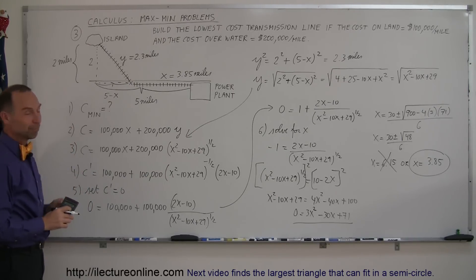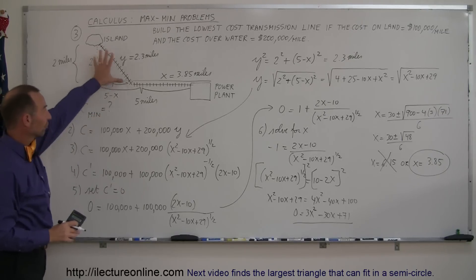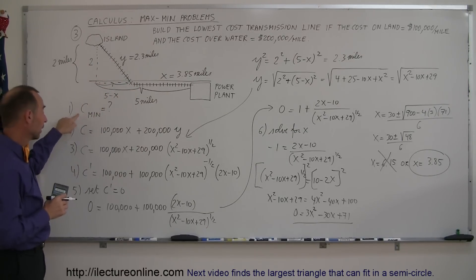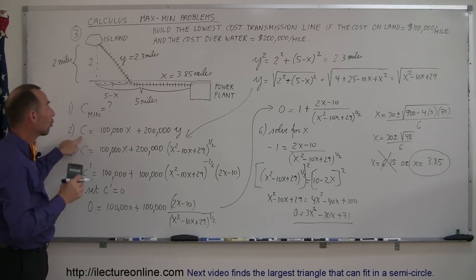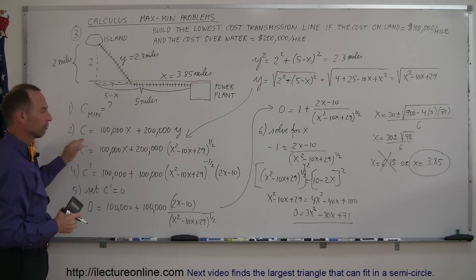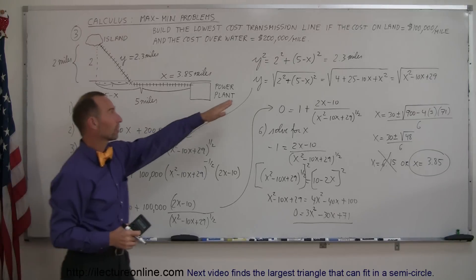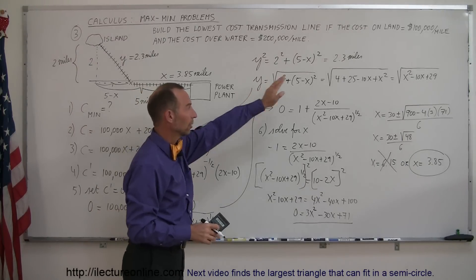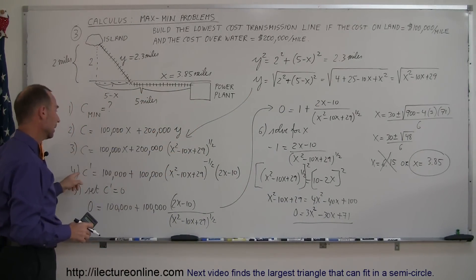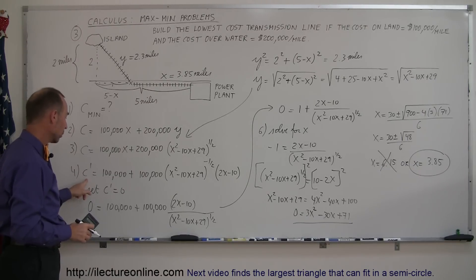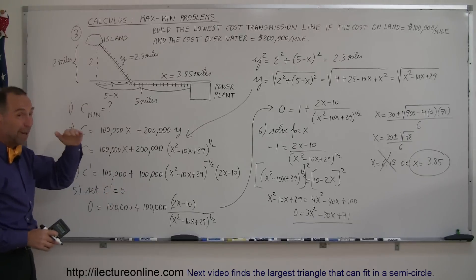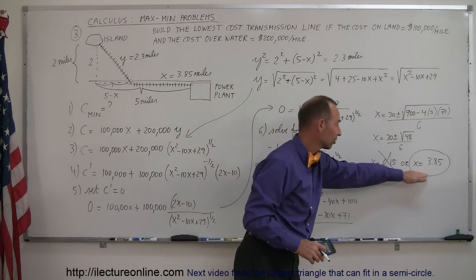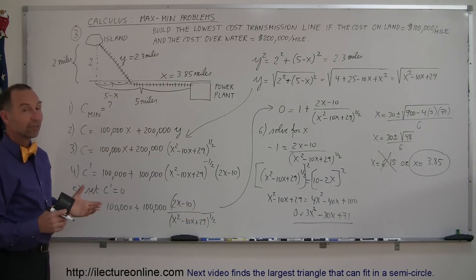Quick review: First, make a drawing to indicate what's going on in the problem. Determine what you're trying to maximize or minimize. Find an equation that expresses the cost in terms of all variables. If there are two variables, find a constraint to eliminate one — express y in terms of x and substitute. Take the derivative, set it equal to zero to find the max or min, simplify, then solve for x. Finally, use the constraint to solve for the other variable.